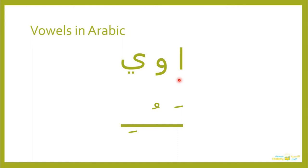The alif sounds like a long A, the waw sounds like a long U, and the ya sounds like a long E. The short vowels in Arabic are called حركات or تشكيل, and they come on top of the letters or under the letter. This is a fatha and it sounds like A. This is a dhamma and it sounds like U. And this is a kasra and it sounds like I.